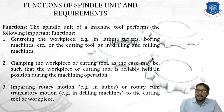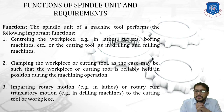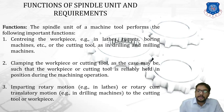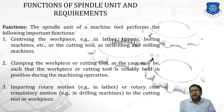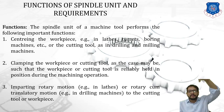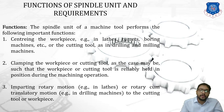The third major function is imparting motion — specifically rotary motion, for example in a lathe, or rotary plus translatory motion in the case of a drilling machine, to the cutting tool or workpiece. Remember: first is rotary motion, second is translatory motion, specifically in vertical drilling machines where translatory motion is also provided to the machine tool bed.